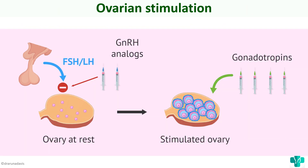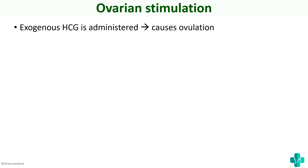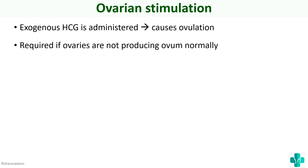First we will see about ovulation induction. Ovulation induction or ovarian stimulation is basically inducing the ovary to produce more ova. You are helping the ovary to develop or produce more ovum, and that is by providing exogenous gonadotropins. Exogenous human chorionic gonadotropin is administered, which in turn causes ovulation.